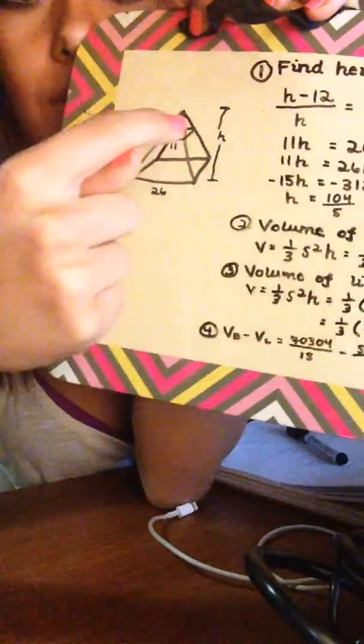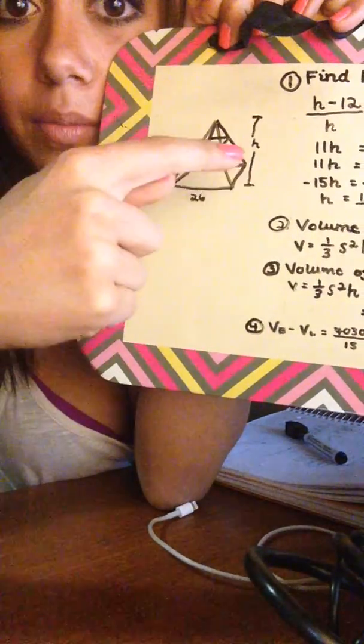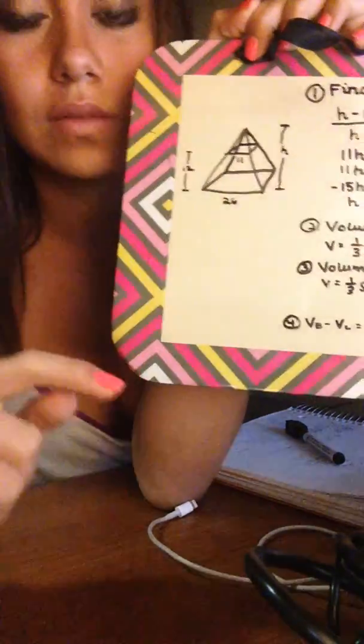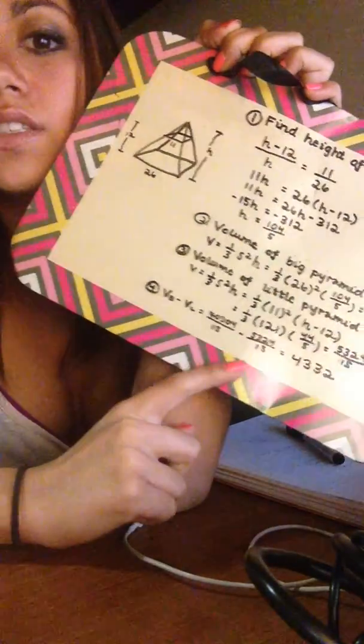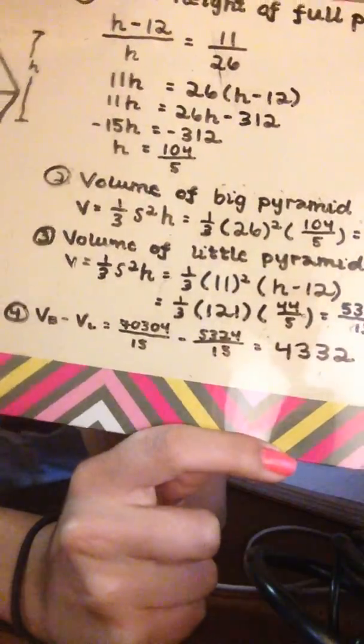Then to get the final volume of the frustum, you're going to subtract the little volume from the big volume. Because then you'll end up with this entire pyramid minus this little piece, and that will give you the bottom piece. And that turns out to be 4,332.